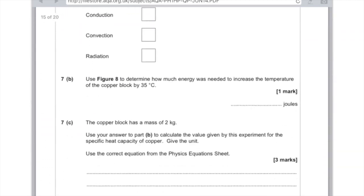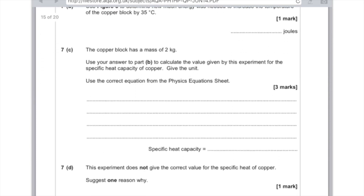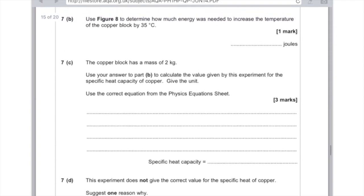The copper block has a mass of two kilograms. Use your answer to part B to calculate the value given by this experiment for the specific heat capacity of copper. Give the unit and use the correct equation. Energy equals mass times specific heat capacity times temperature change. 35,000 equals mass, which is two kilograms, times C times 35.